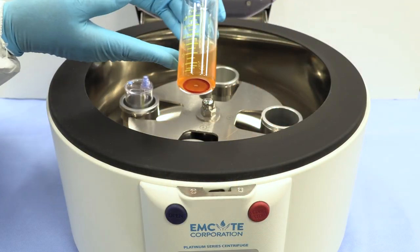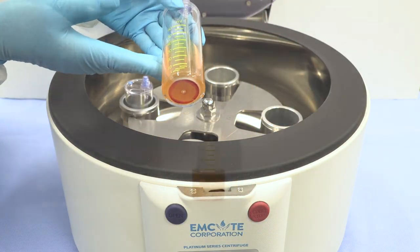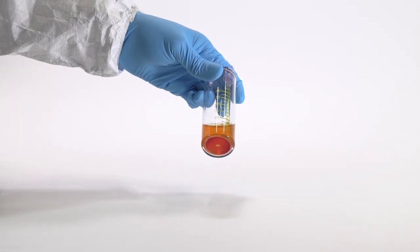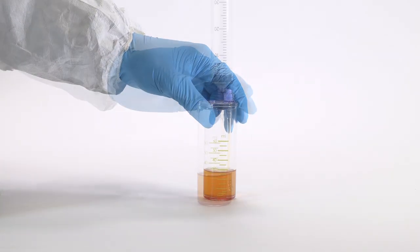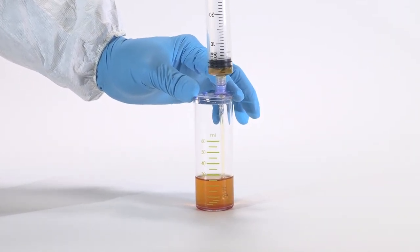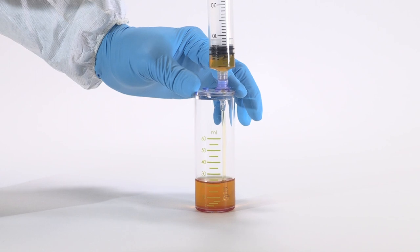After centrifugation, the platelet buffy coat layer will be clearly visible at the bottom of the device. Attach a sterile syringe to the needleless port and aspirate the plasma leaving 7 milliliters of solution in the device.